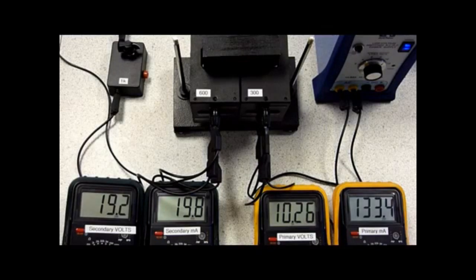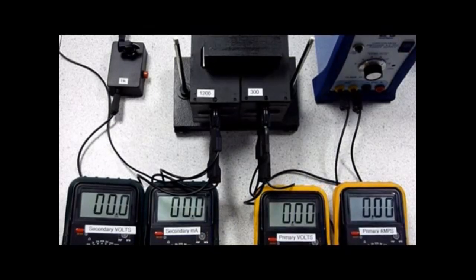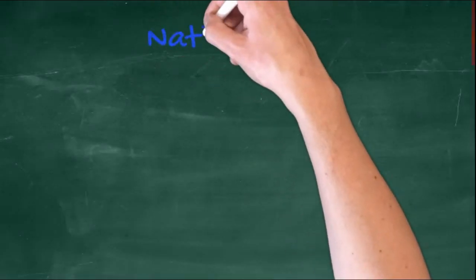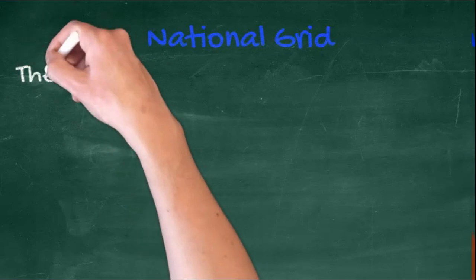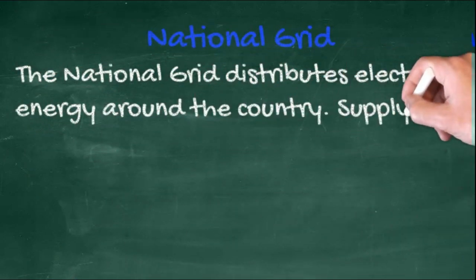This is just an example showing that though the voltage pretty much increases in the ratio of the number of turns, the efficiency is very poor. Transformers are an essential part of the national grid, where pylons carry electricity all around the country.